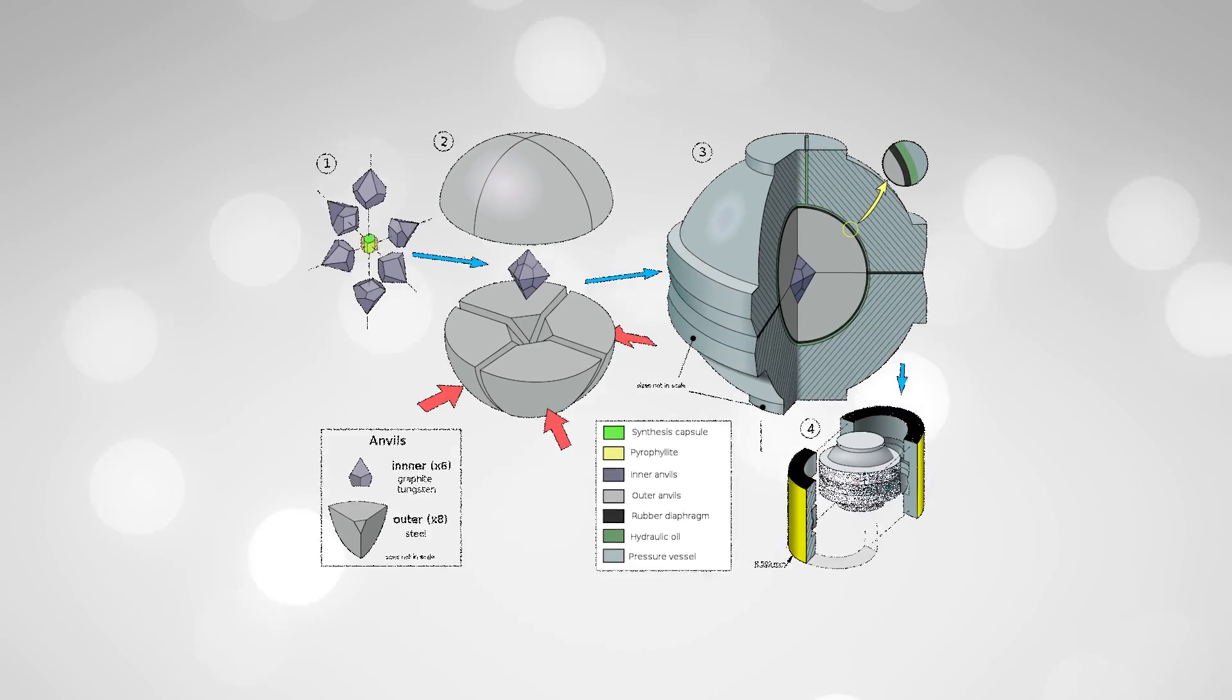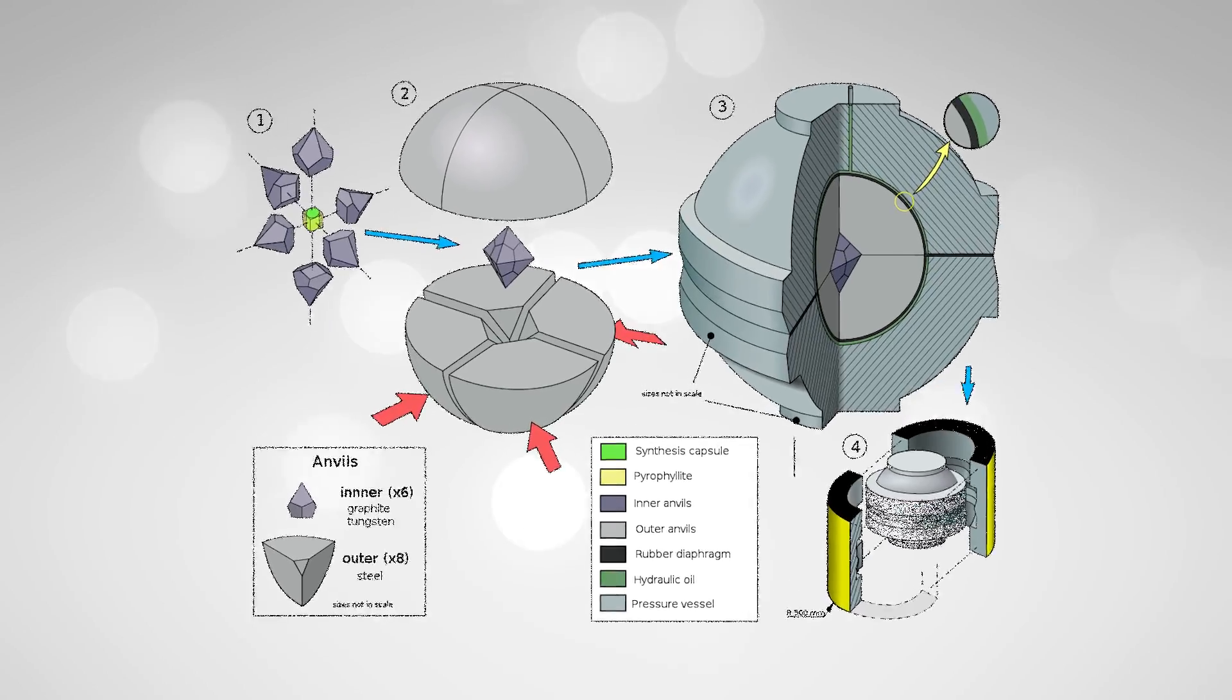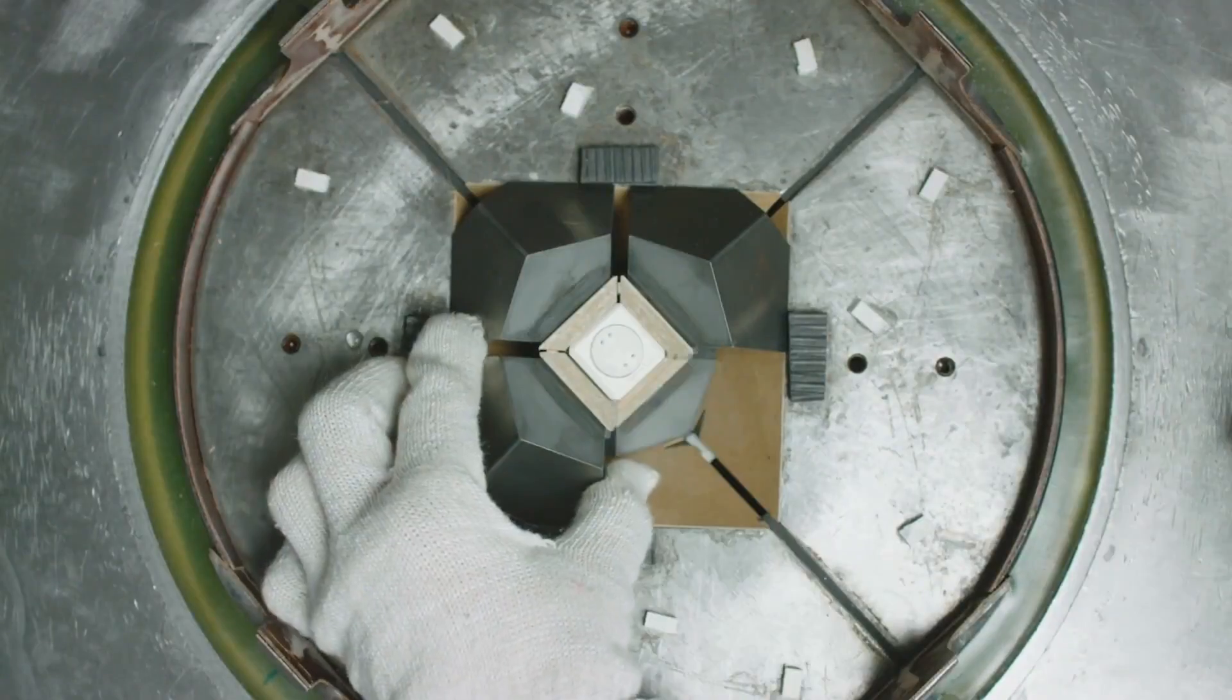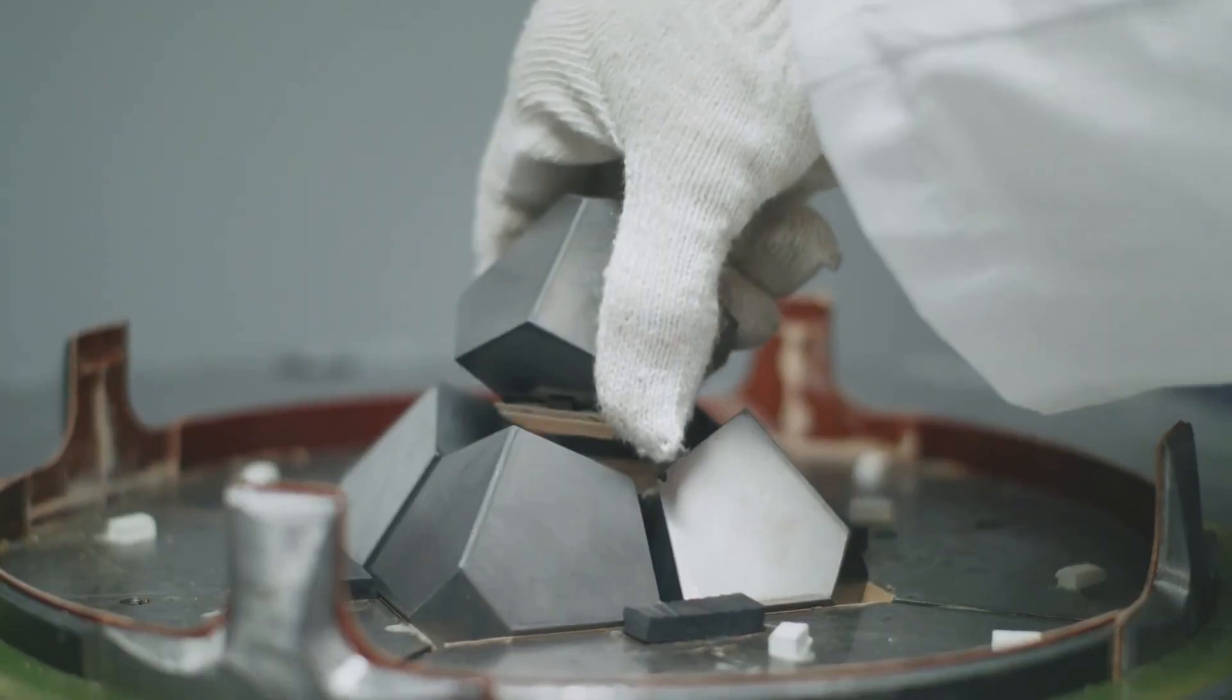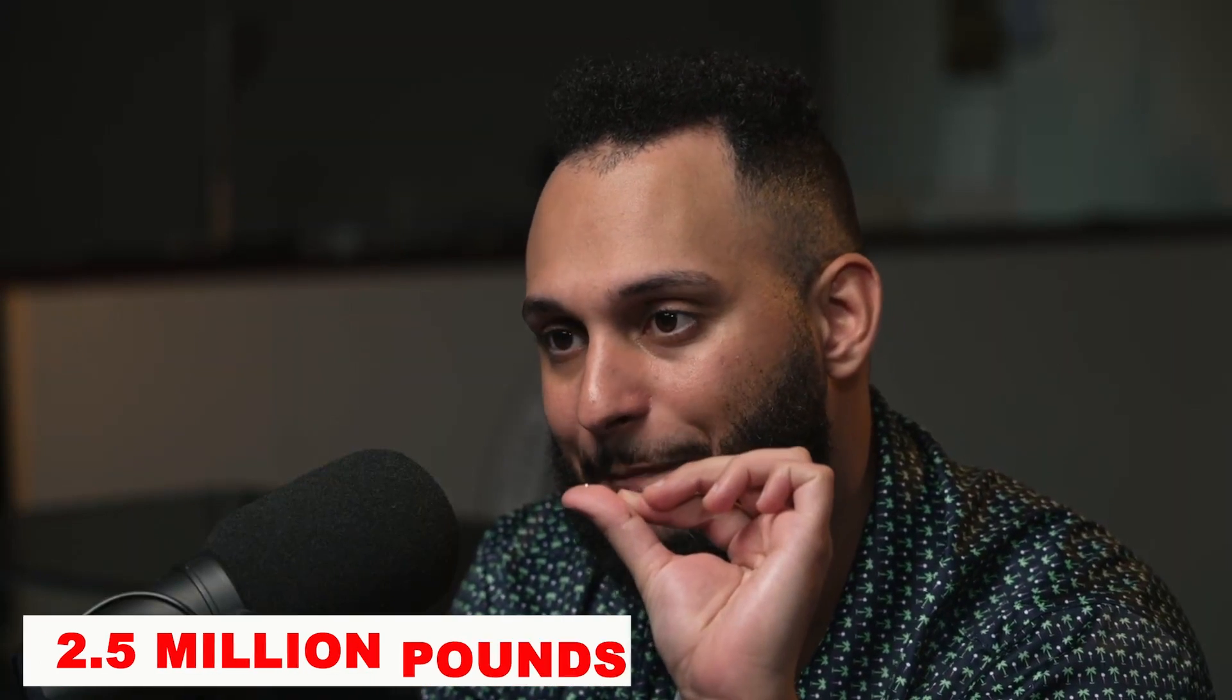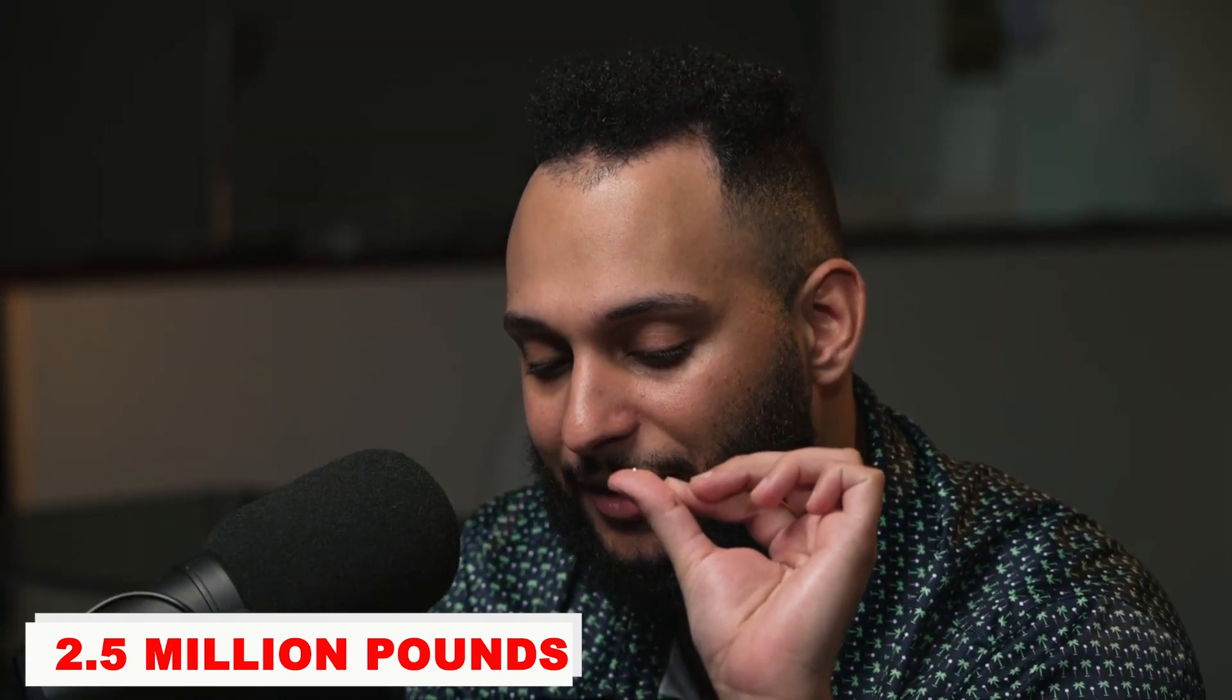The HPHT method, on the other hand, recreates the intense conditions found deep within the Earth's mantle. In this process, a small diamond seed is placed in a press where extreme pressure and high temperature are applied. These conditions can reach up to 2.5 million pounds per square inch and temperatures as high as 2200 degrees Celsius.